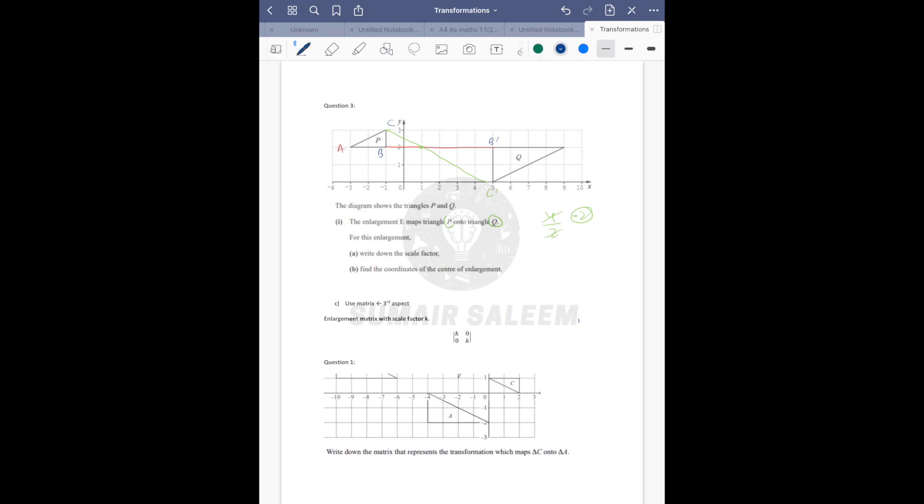As you can see, you need to know the matrix: k, 0, 0, k where k is the scale factor. Now what is the value of k? Image is 4 and object is 2, it's going to be 4 upon 2 that's 2. But since it's in the opposite direction, it's going to be minus 2, 0, 0, minus 2. Got this? So this is how it is done.